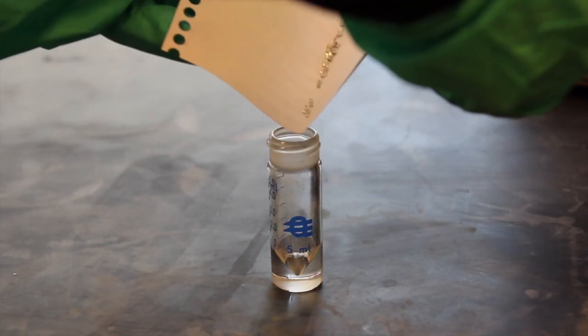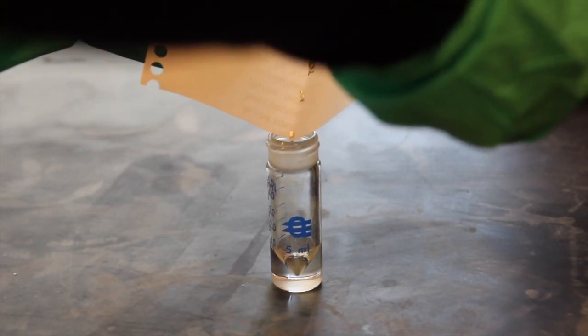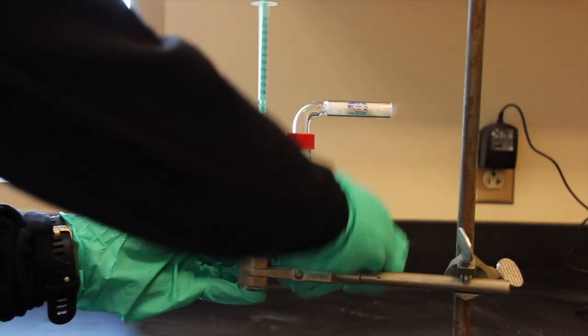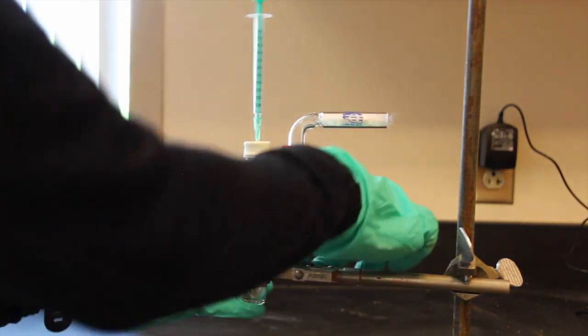Detach the 5 milliliter conical vial from the assembled apparatus and transfer the magnesium pieces to the vial. Place the dry spin vane in the vial and reattach the vial to the apparatus, being sure to center it above the stirrer.